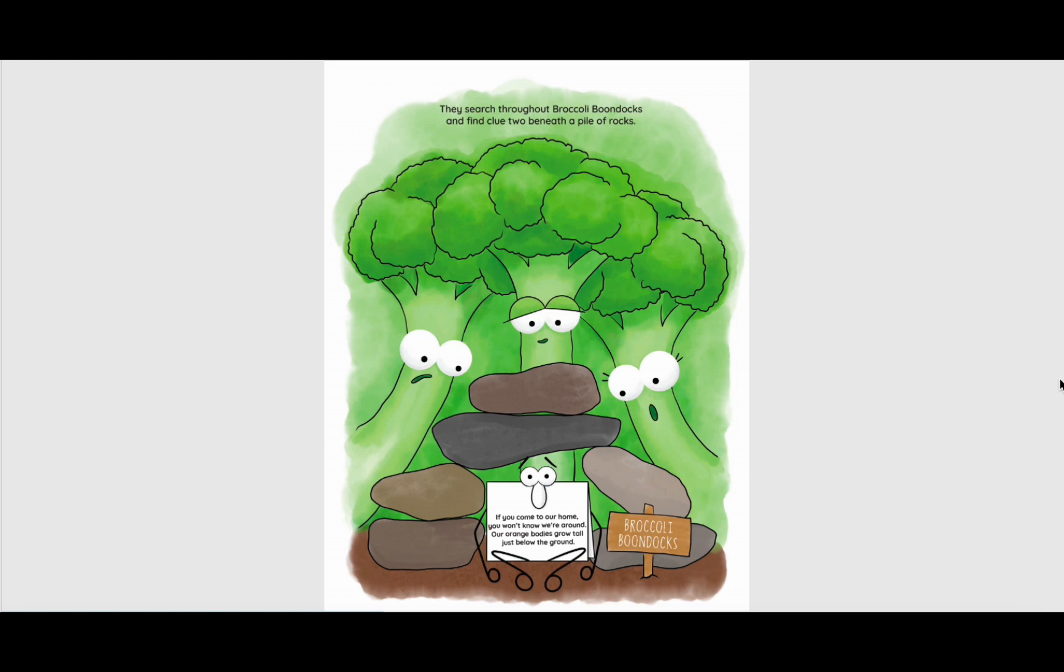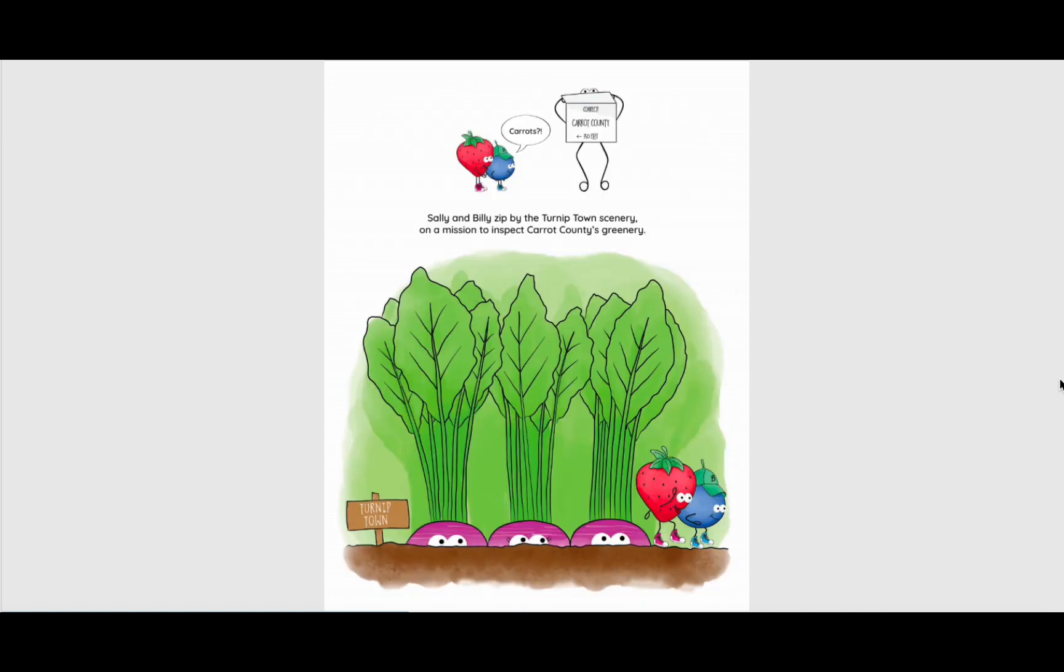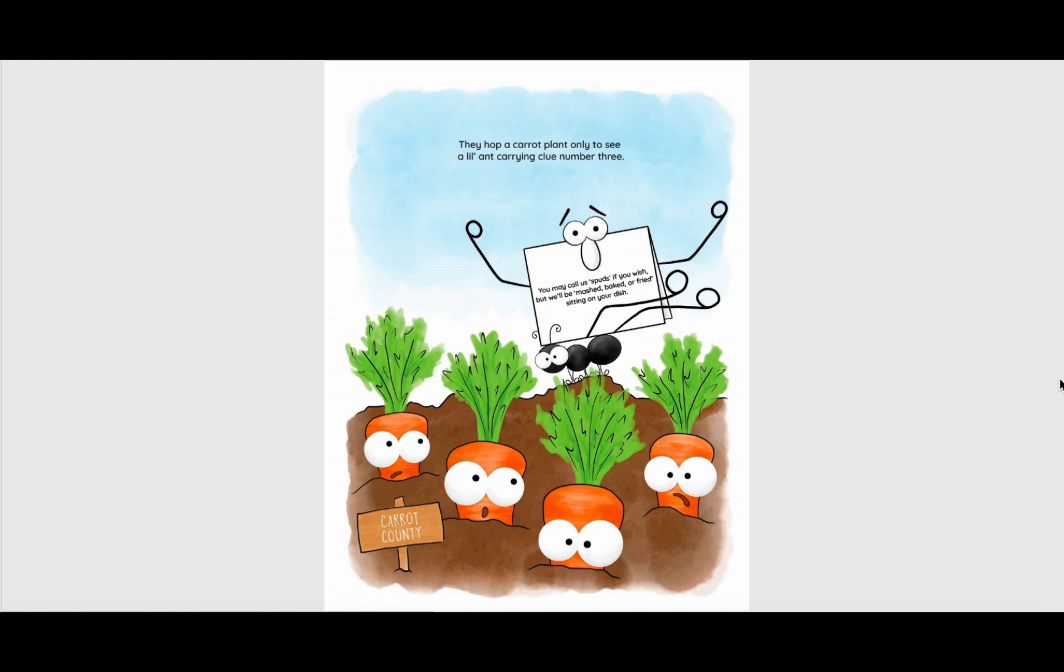They search throughout broccoli boondocks and find clue two beneath a pile of rocks. If you come to our home, you won't know we're around. Our orange bodies grow tall, just below the ground. Carrots. Correct. Carrot County. Sally and Billy zip by the Turnip Town scenery on a mission to inspect Carrot County's greenery. They hop a carrot plant only to see a little ant carrying clue number three.